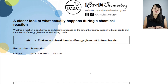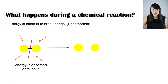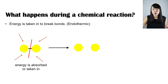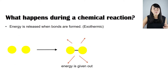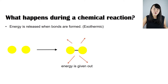In a chemical reaction, bonds are broken and bonds are formed. Energy must be taken in to break bonds, resulting in the individual atoms — and this type of energy change is endothermic. When bonds are formed, energy must be released, and this type of energy change is called exothermic.